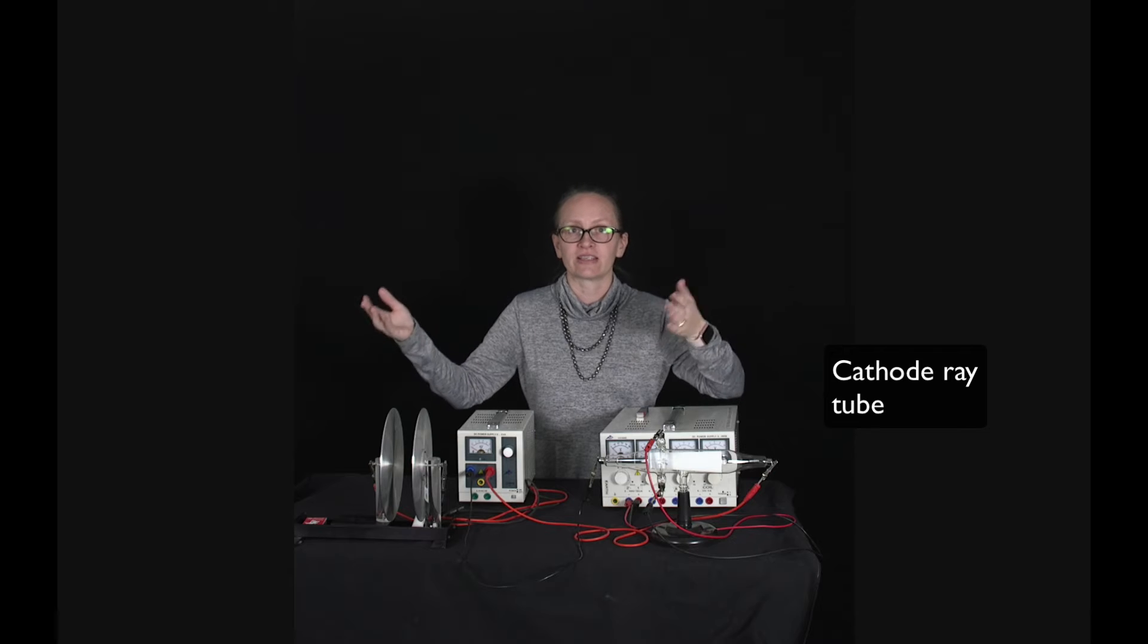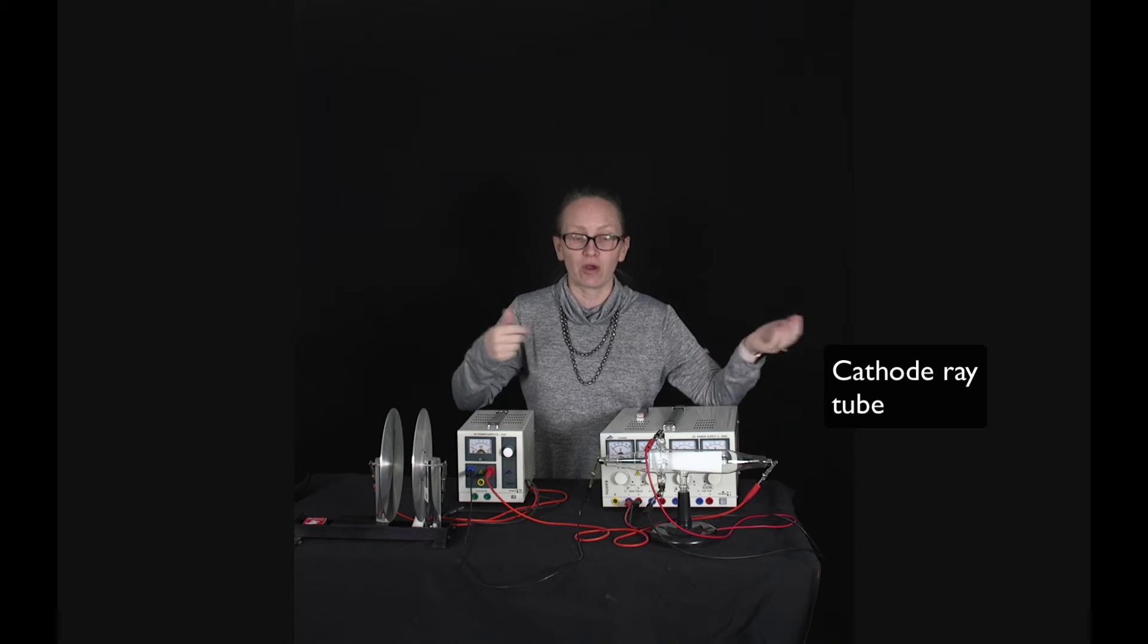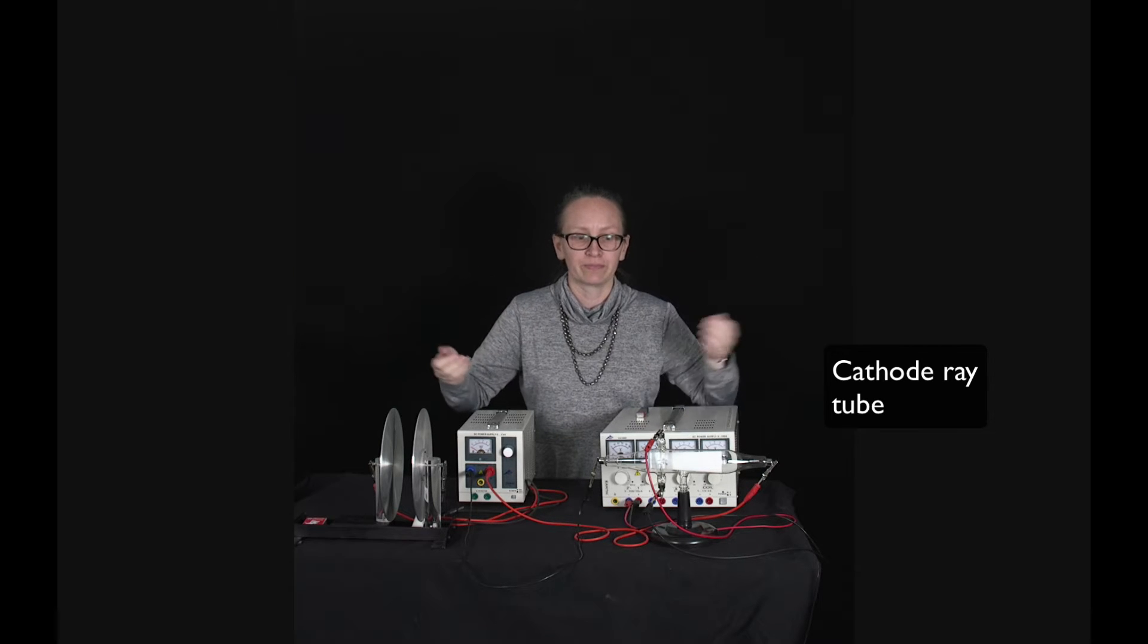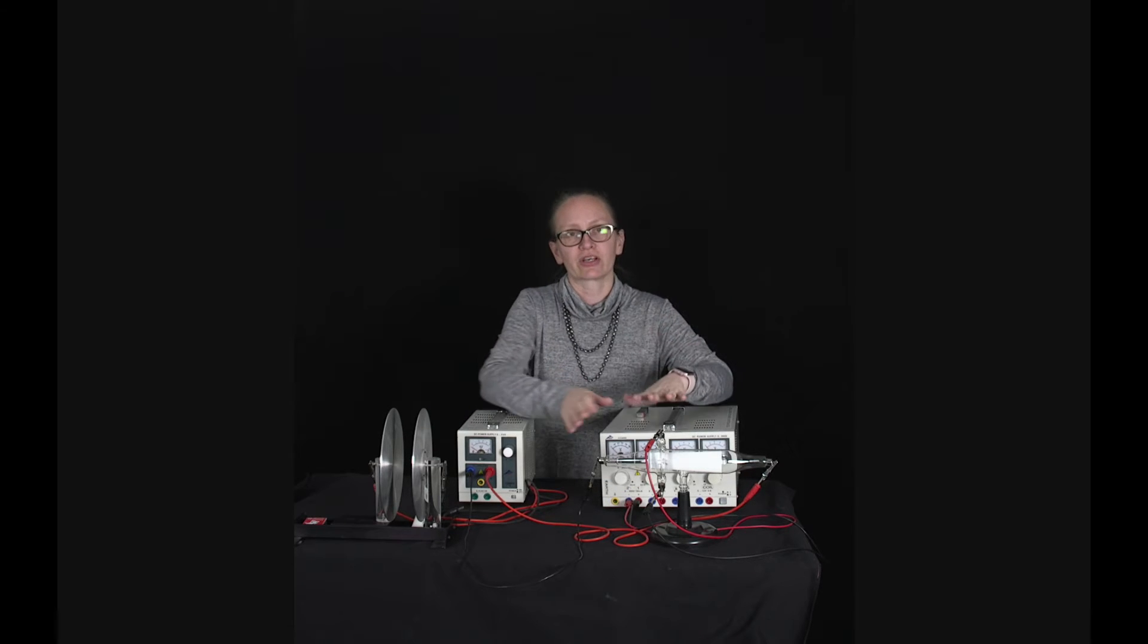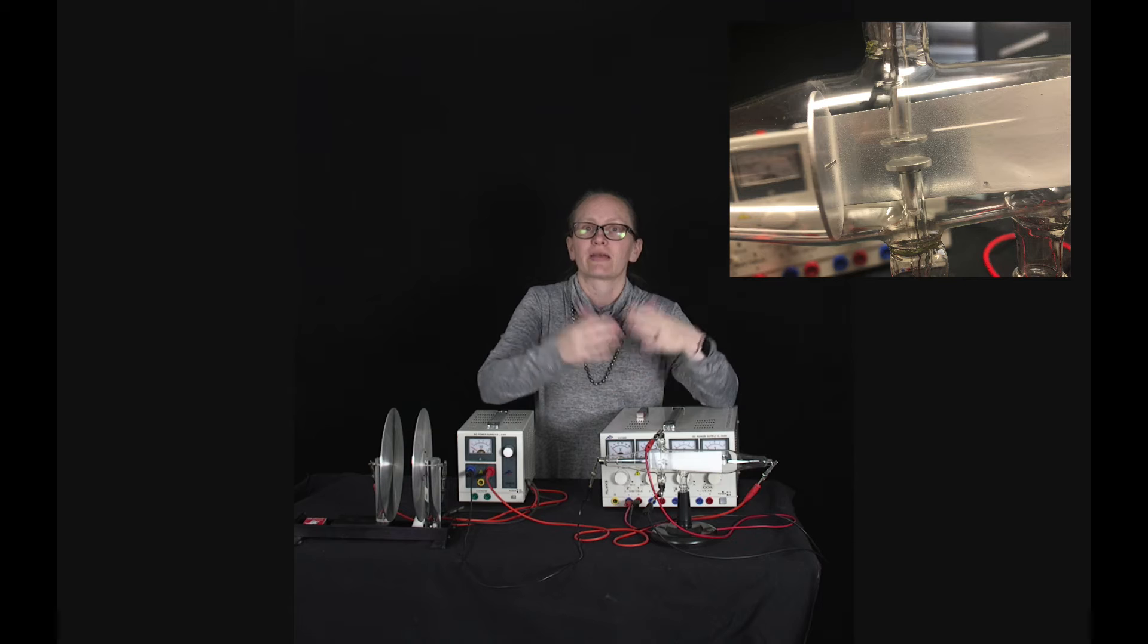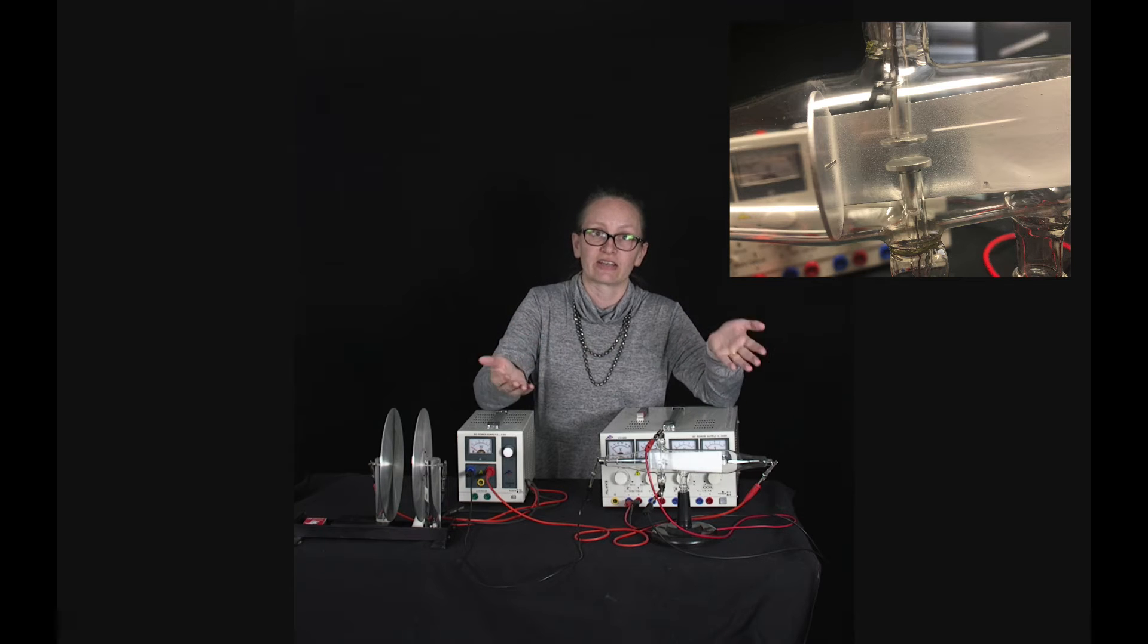So cathode rays are just electrons. They were called cathode rays initially because it wasn't realized that they were electrons until later. And in here I've got a couple of plates which I'm going to apply a voltage across and when I do that I generate an electric field.